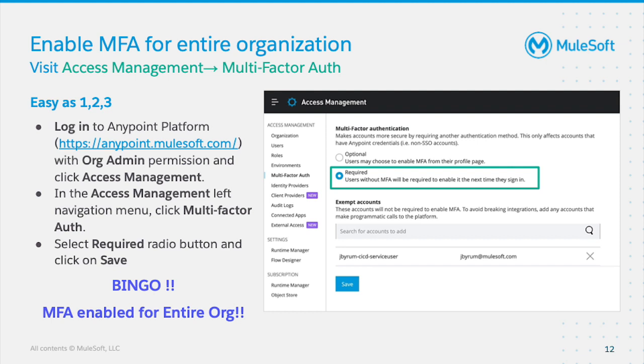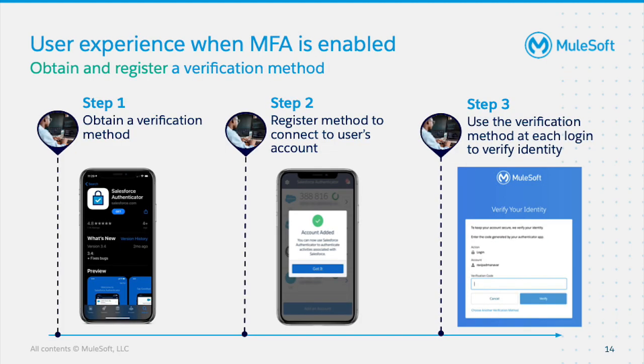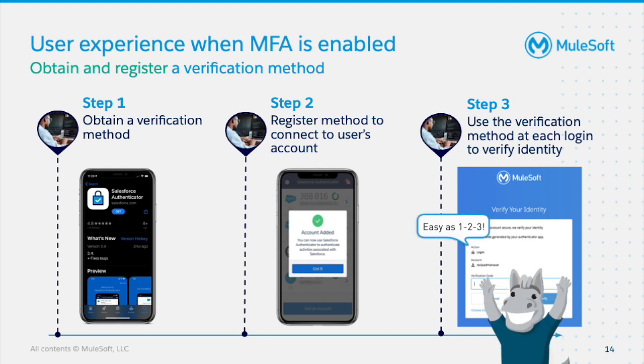Let's see how a user can obtain and register a verification method. The user must register at least one verification method. Step one is to obtain a verification method such as an authenticator app, which the user must download and install on their device. Step two is to then register this method. Note that the registration process is automatically initiated upon login and guides the user at every step. Thereafter, every time the user logs in with a username and password, they are prompted to provide additional verification.